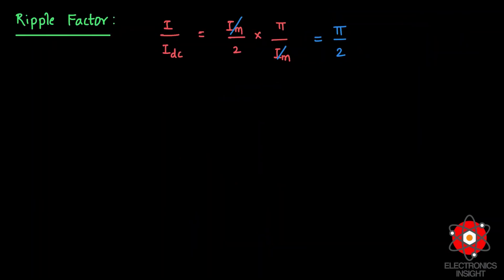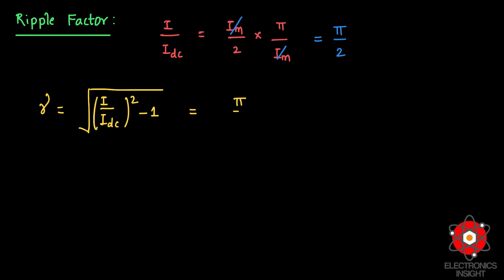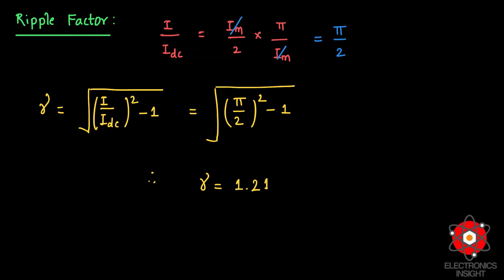Finally, to calculate the ripple factor of the half-wave rectifier, we first find the ratio of IRMS to IDC, which gives π/2. The ripple factor γ = √[(IRMS/IDC)² − 1] = √[(π/2)² − 1]. Substituting and solving gives γ = 1.21, which is the ripple factor for the half-wave rectifier circuit.